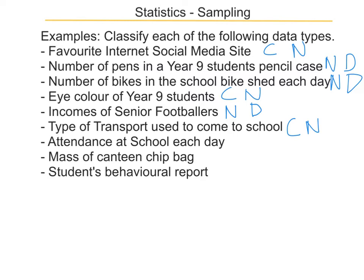One type of transport is not taken to be better than another. Attendance at school is numerical because we count the number of days someone has attended, and whether we count days or periods, we won't be counting any fractions, so that's discrete. The mass of a canteen chip bag is numerical because we're measuring how much mass it has, and because we're measuring it, the actual number can be any value, so that's continuous. The last one — a student's report — is categorical because it has things like good and very good, which are not numbers, and it's ordinal because there is an inferred order: excellent is better than very good, very good is better than good, etc.